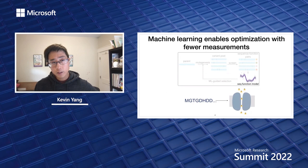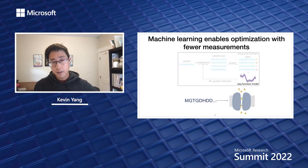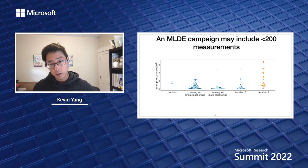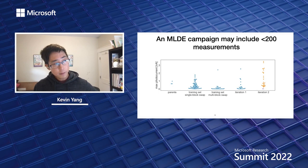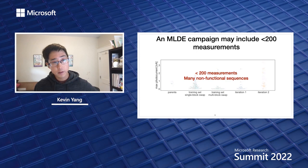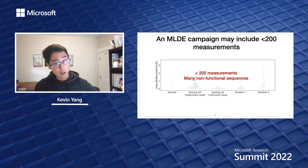A typical machine learning guided directed evolution, or MLDE, campaign might include fewer than 200 measurements. Starting with three parents and trying to increase the max photocurrent — the amount of current this protein lets into the cell when exposed to a certain wavelength of light — in every iteration we find better and better variants using machine learning, with fewer than 200 measurements. You also notice that many of the measurements made are for very bad or non-functional proteins with essentially zero function.